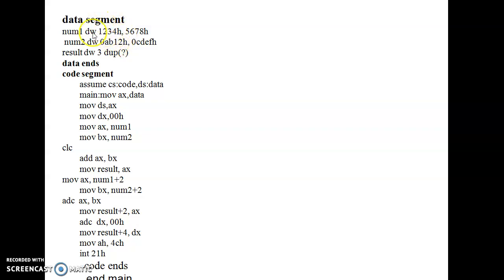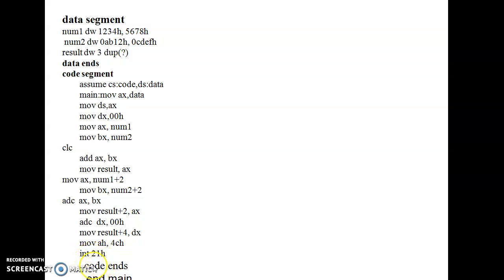For the next segment, we use MOV AX, number1+2 and MOV BX, number2+2, then use the ADC command — add with carry — so any carry from the previous addition also gets added. The result is stored. The last command is INT 21H, which is a common interrupt command used for almost all programs, and it ends the program. Then code ends and end main closes the code segment, completing the programming part.